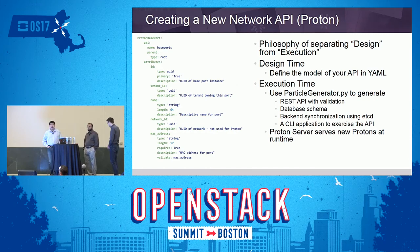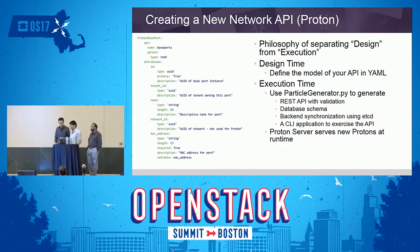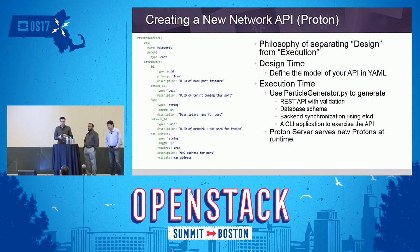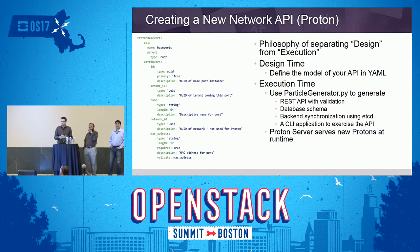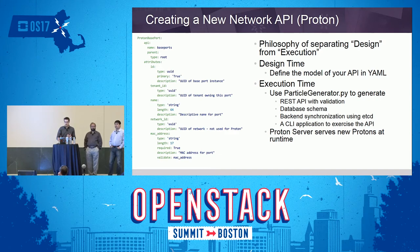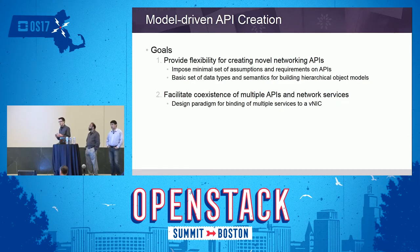Now you know why we want a model-driven approach in Gluon. We want something that allows you to very quickly and flexibly do design work and come up with new networking APIs. It's really about the design time aspect — you just think about what kind of API you want, write it down, and you don't need to handle runtime aspects like creating the REST API, database schemas, and so on. That's the overarching reason why we want a model-driven approach.